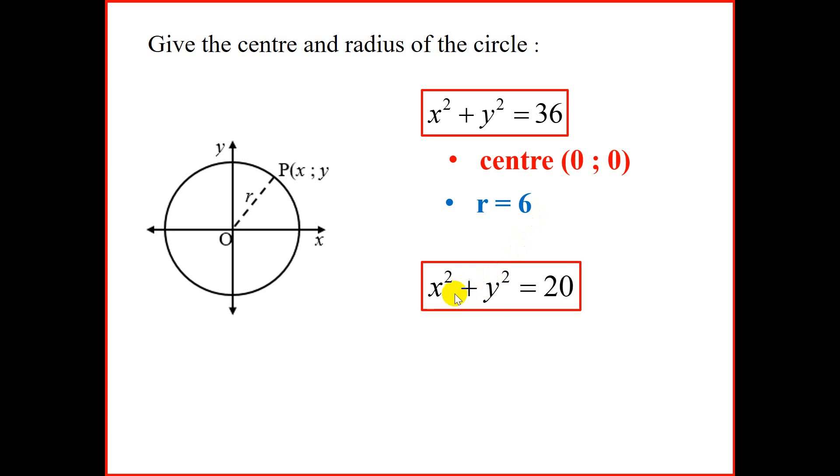Let's take another question, x² + y² = 20. We have the standard form x² + y² = r². Immediately, we know the center is (0, 0). And the radius is the square root of 20, which is, in simplified surd form, 2√5.